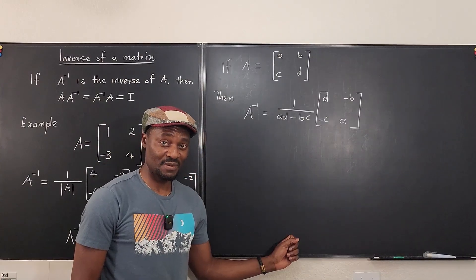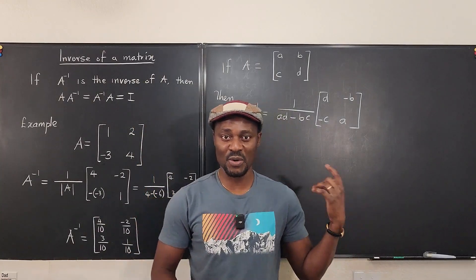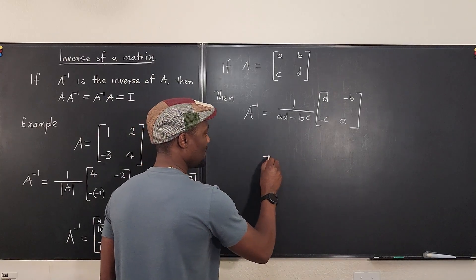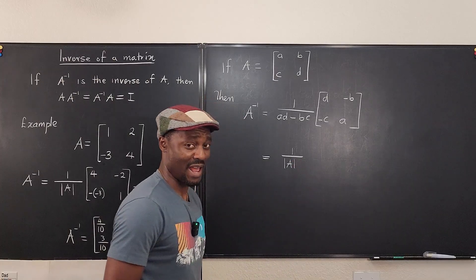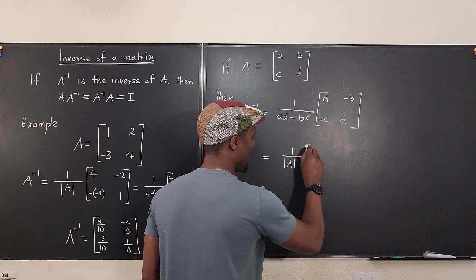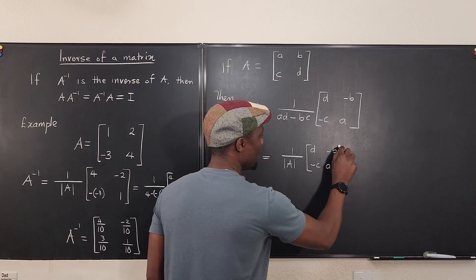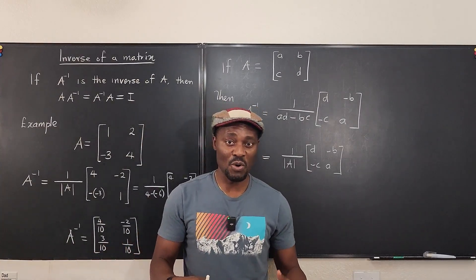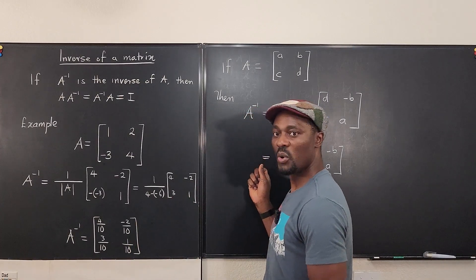The formula is: A-inverse equals 1 over the determinant of A, multiplied by the matrix [d, -b; -c, a]. This process of getting the formula was what we went through when we solved it using algebra. You can also obtain the inverse using elementary row operations, but the formula is the most important one for 2x2 matrices.